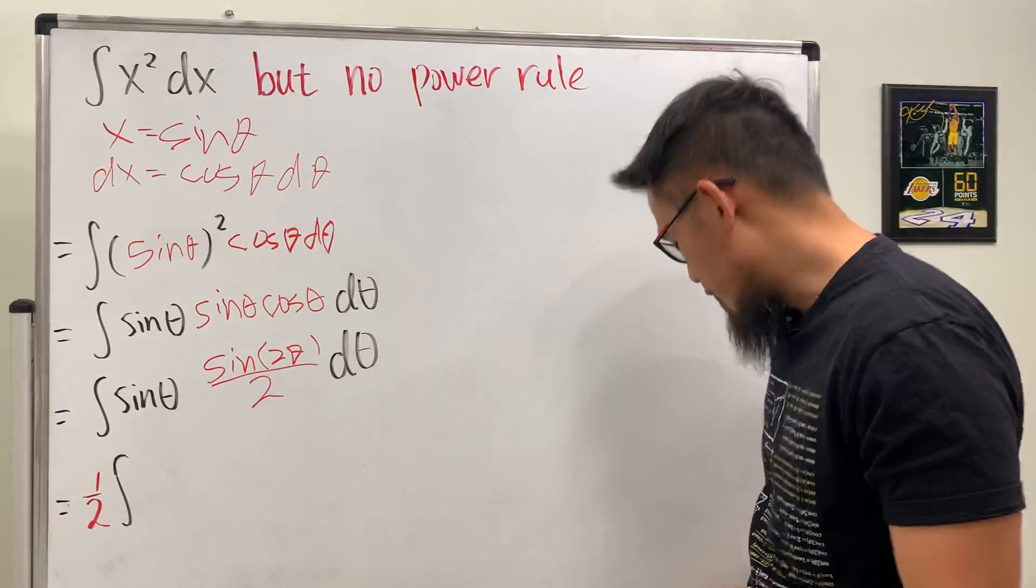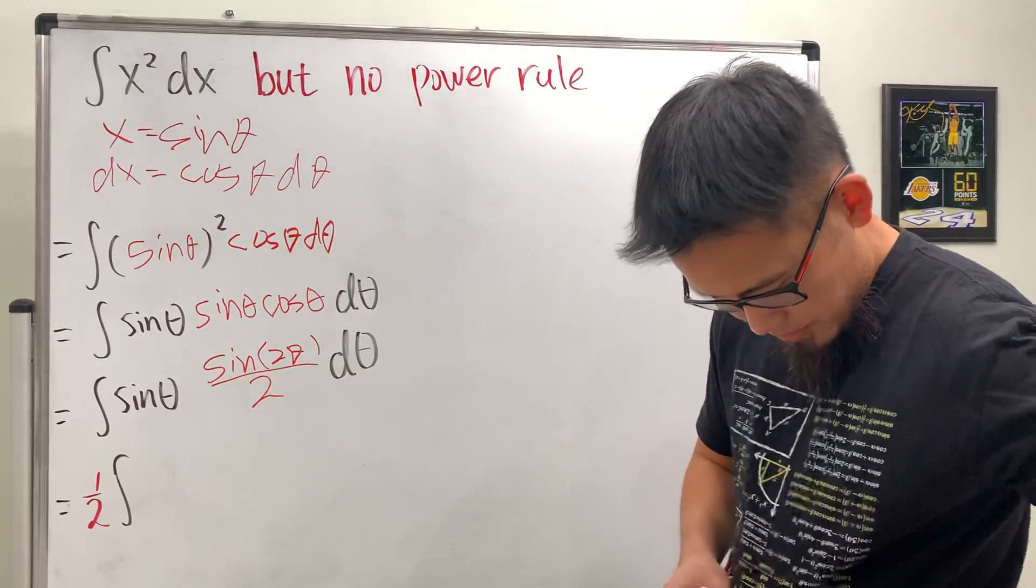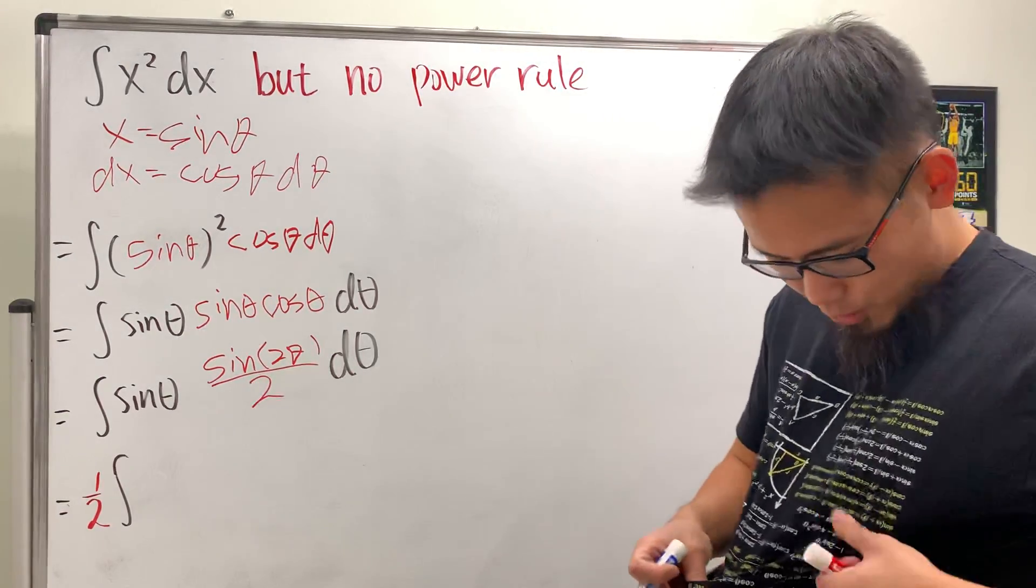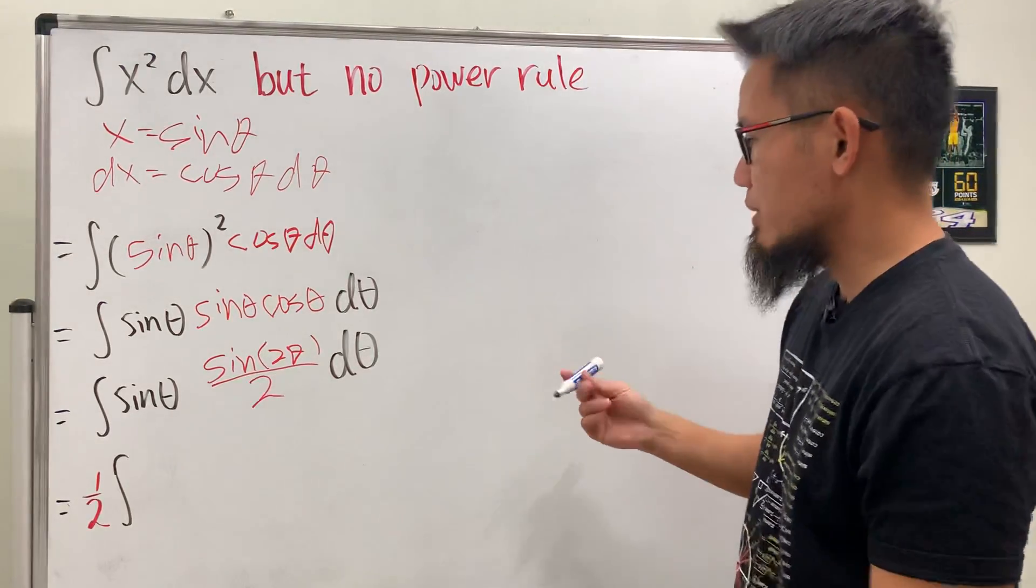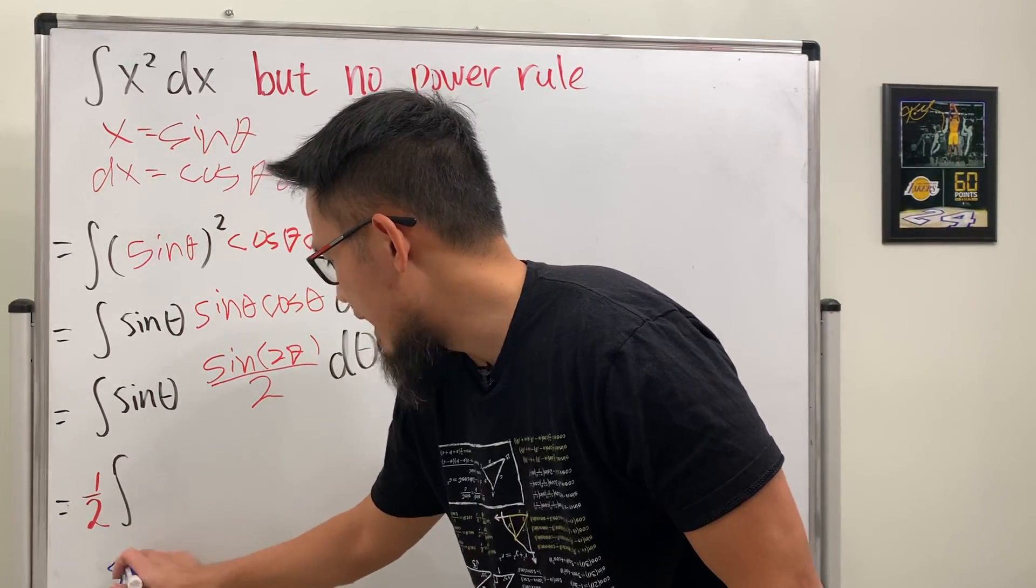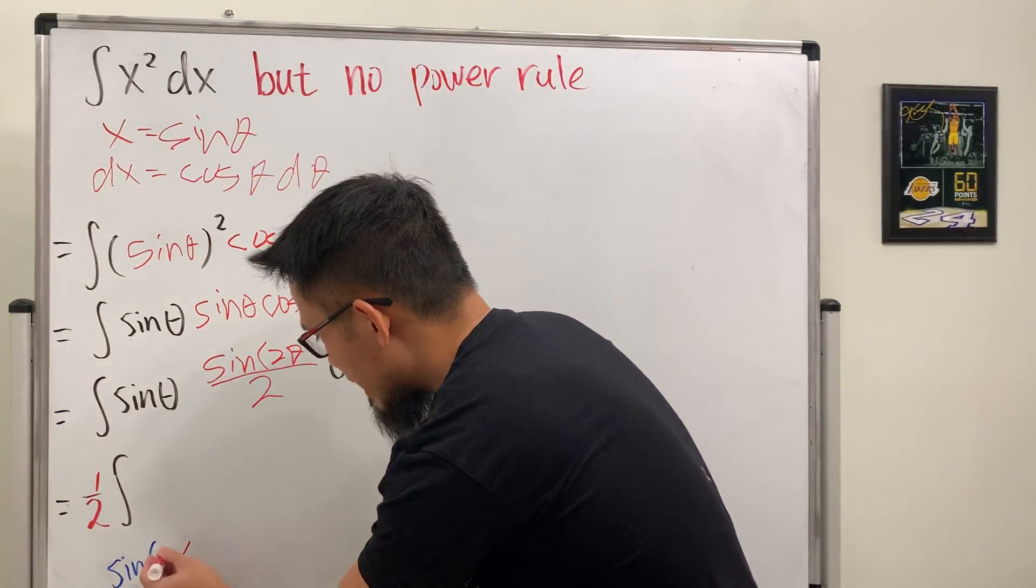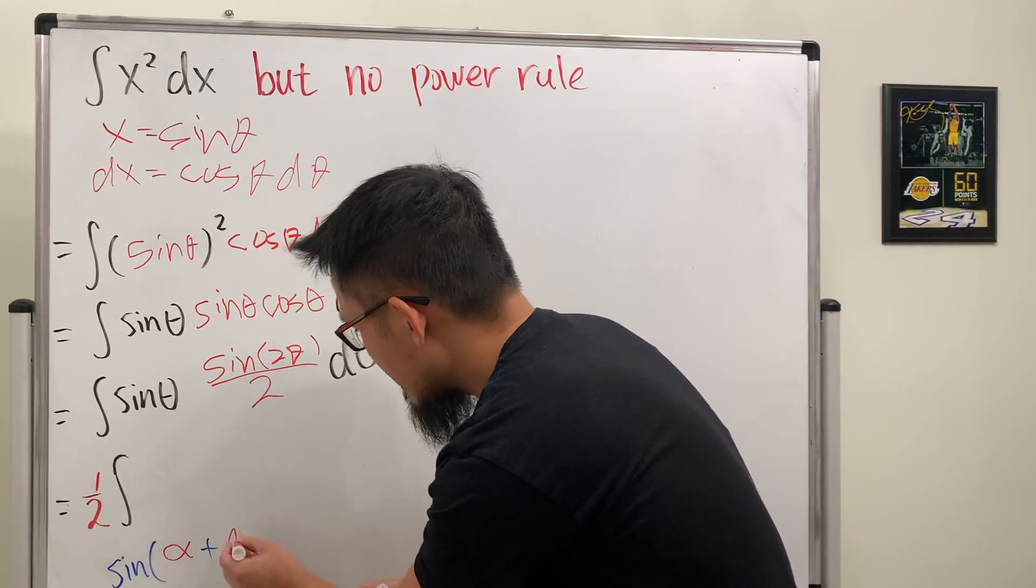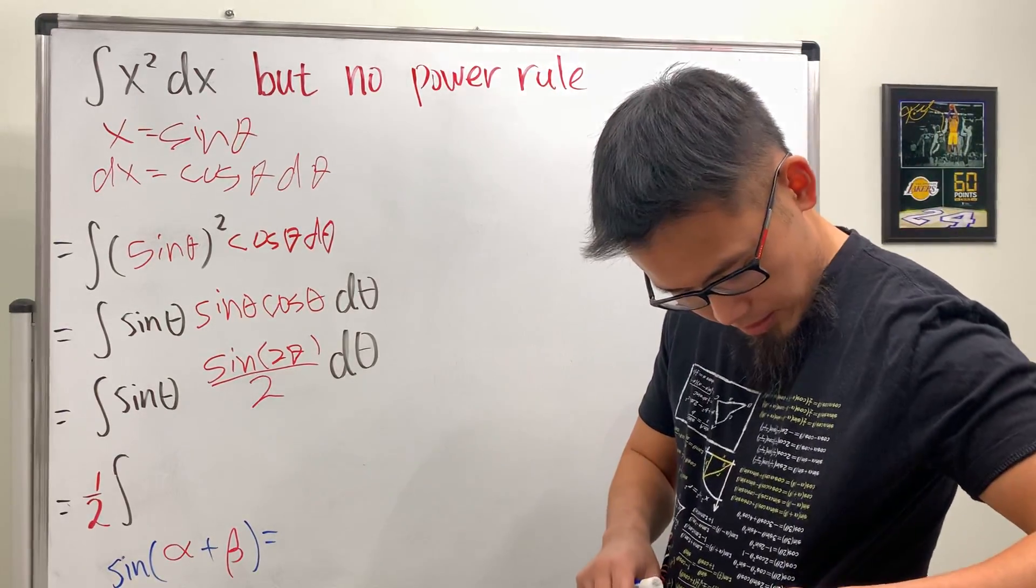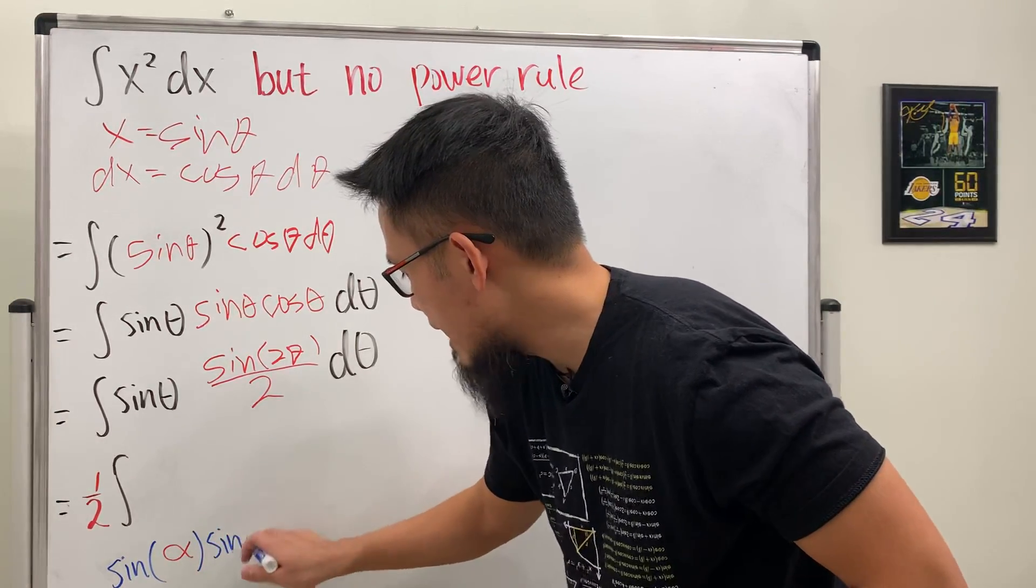Now here we have sine theta times sine of 2 theta. What can we do with it? We will have to use a formula for it. And the formula is actually, let's take a look. We need the sine alpha plus sine theta. This is the shirt for teachers, so you have to be a teacher in order to wear this. And it's really convenient. All right I found it. So let me just put that down right here on the side for you guys.